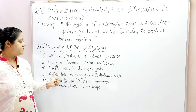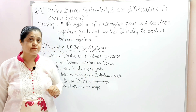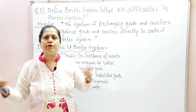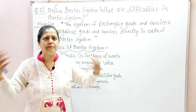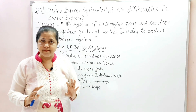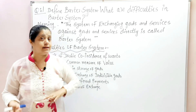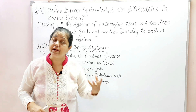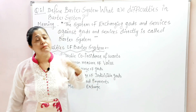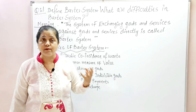Fourth was difficulty in exchange of indivisible goods. Other goods could somehow be managed, but how do you exchange indivisible goods? Indivisible goods means animal commodities — cows, buffaloes, horses, sheep, goats. These animals are used fully: cows and buffaloes provide milk which you use and distribute. But if a farmer needs a cow or oxen or horse for ploughing, how will he purchase them?